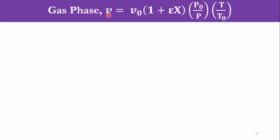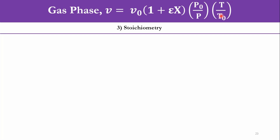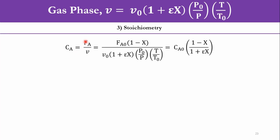For the gas phase system, it is not as simple. Here, V = V₀(1 + εX)(P₀/P)(T/T₀). Applying stoichiometry: CA = FA/V = FA0(1−X) · V₀ / [V₀(1 + εX)(P₀/P)(T/T₀)]. Note FA0/V₀ = CA0. Assuming no pressure drop, P₀/P = 1, and for an isothermal system T/T₀ = 1. So CA = CA0(1−X)/(1 + εX), as derived in the stoichiometry chapter.